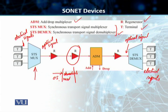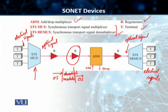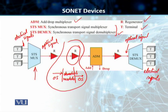The regenerator takes the optical signal, demodulates it to get the electrical signal out of it, then regenerates this electrical signal and makes some minor changes to the header as well. Then it modulates this electrical signal back onto the optical signal and sends it on as an optical signal again. It's basically a repeater, and we'll talk about this concept further in later discussions.